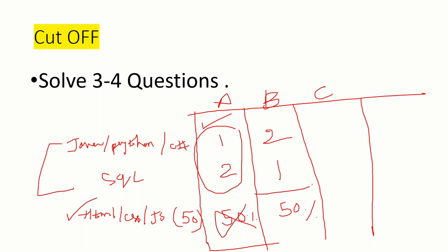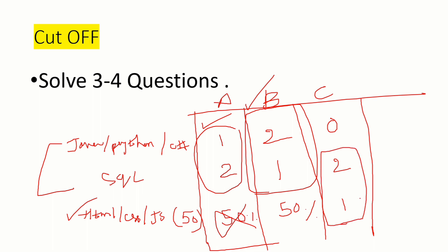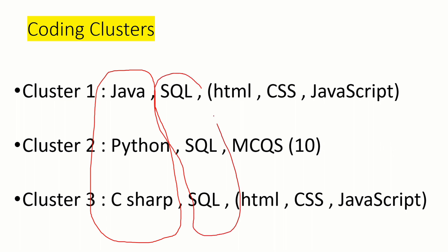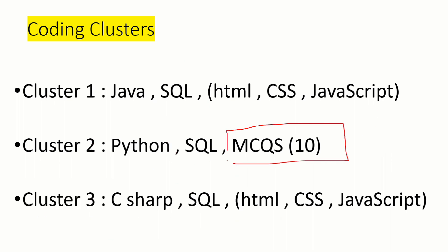If you did not solve the HTML/CSS/JavaScript, there is still a 70% chance of receiving the interview mail. Another scenario: if you solve two programming questions, one SQL question, and 50% of the HTML/CSS/JavaScript, there is also a high chance. If you did not solve the Java question but solved two SQL questions and one HTML/CSS/JavaScript, there is less chance. At minimum, solve one programming question; two is even better for a higher chance of receiving the interview mail.